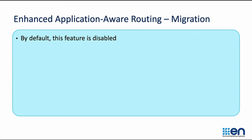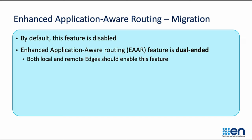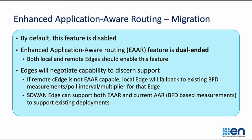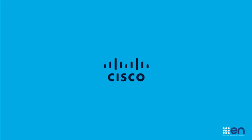Let's look at the migration scenarios. By default, the feature is disabled. Enhanced application-aware routing is a dual-ended feature — both the local WAN edge and the remote SD-WAN edge need to have this feature enabled. The SD-WAN edges negotiate this capability. If the remote SD-WAN edge does not have enhanced application-aware routing enabled, the SD-WAN edge will fall back to using BFD-based measurements to support existing deployments. For configuration and demo, look out for part 3 of the video. Thanks for watching!